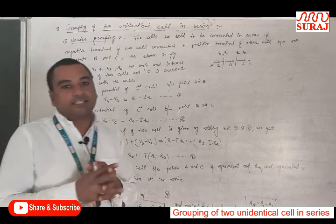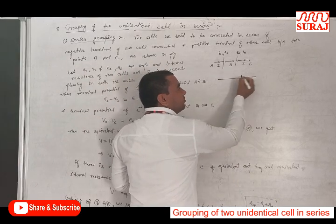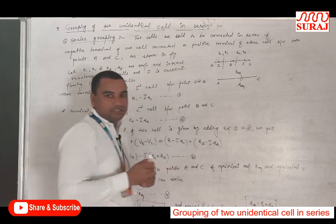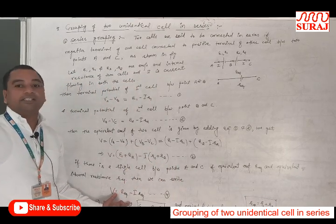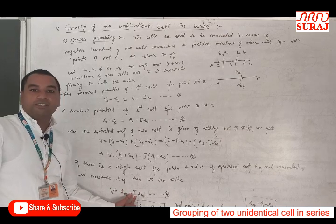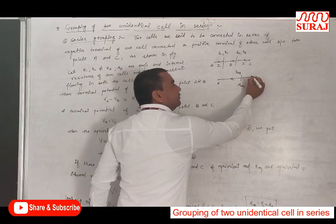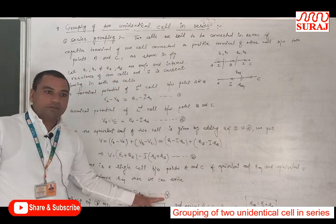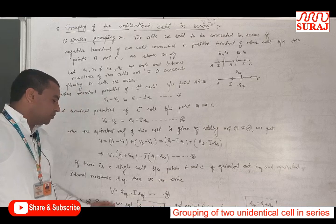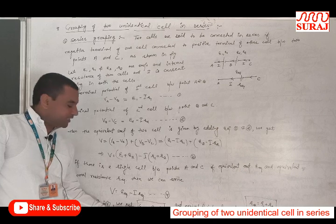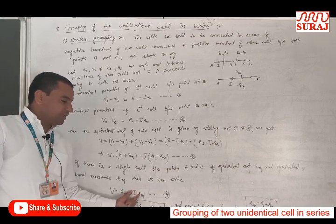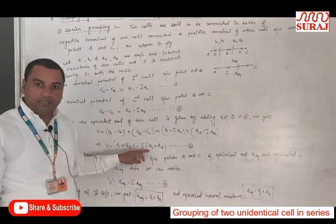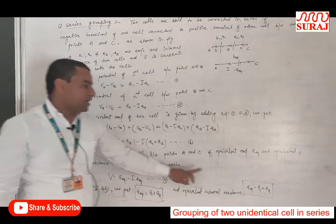Now, if there is a single equivalent cell between points A and C, having EMF E_equivalent and internal resistance R_equivalent, then the terminal potential between A and C can be written as V equals E_equivalent minus I·R_equivalent. Comparing equations 3 and 4, the total EMF of two cells in series is E_equivalent equal to E1 plus E2, and the total internal resistance R_equivalent is equal to R1 plus R2.